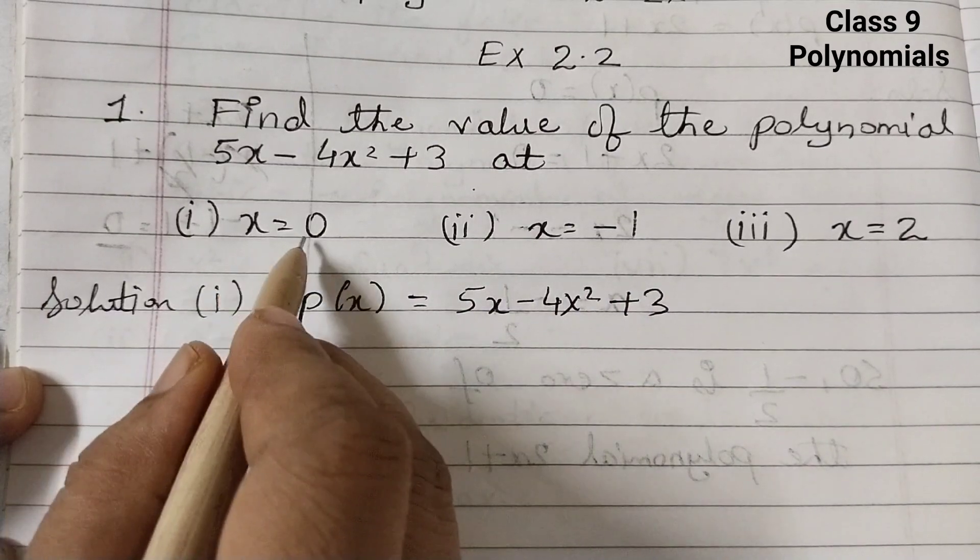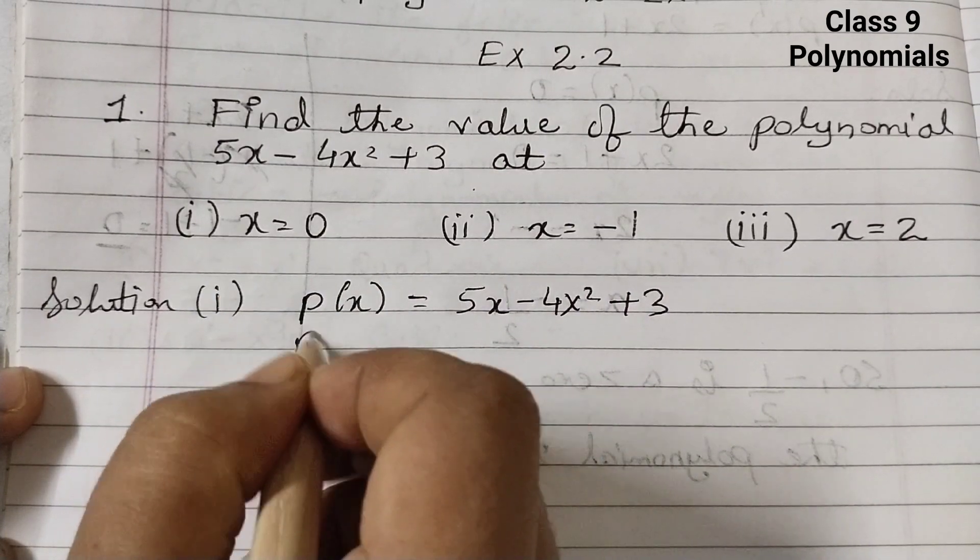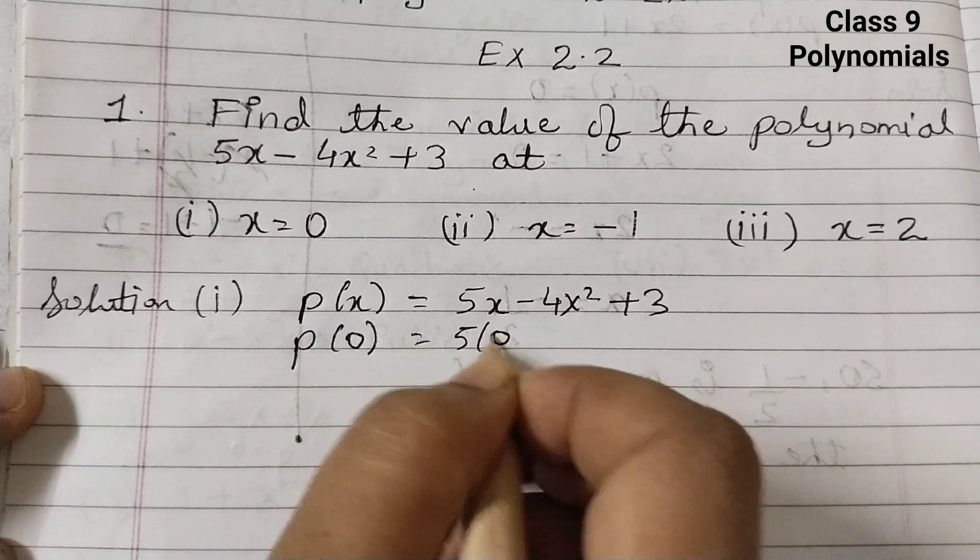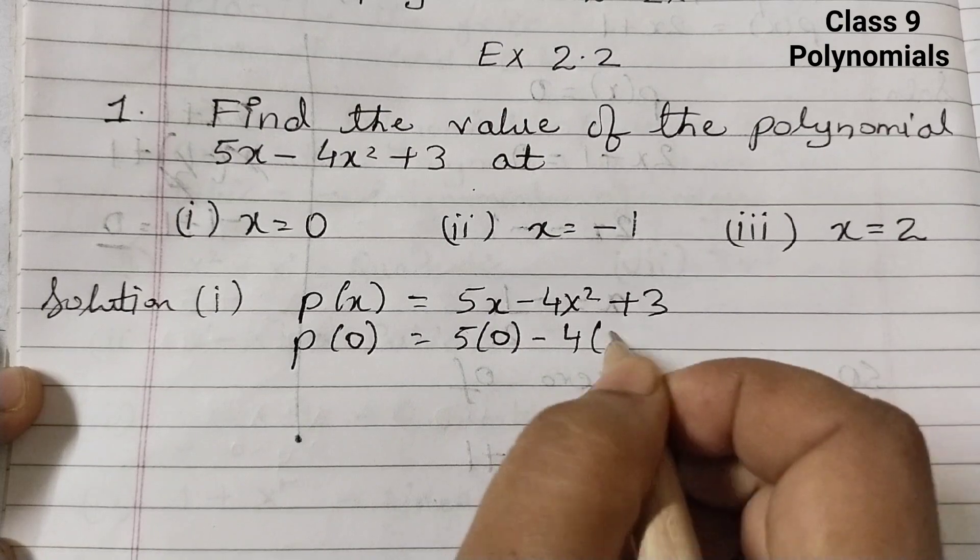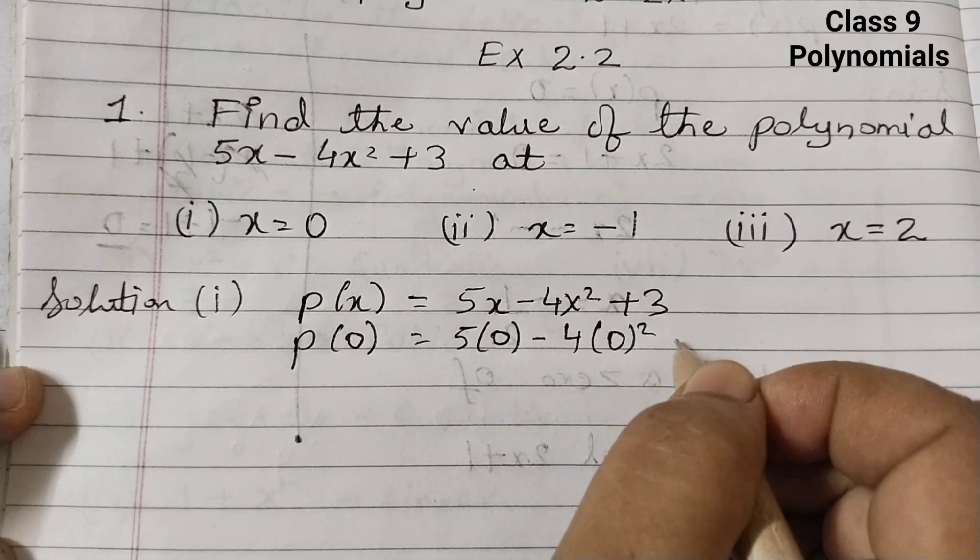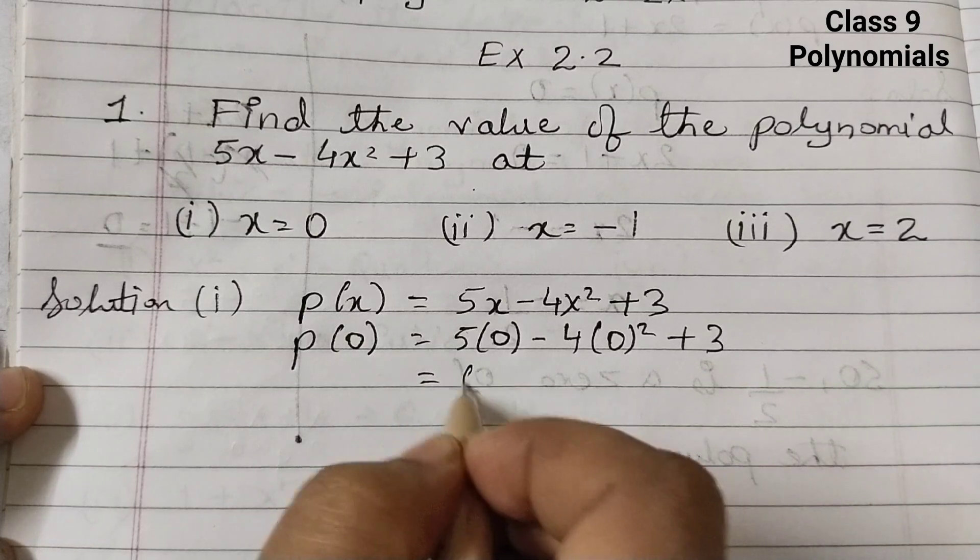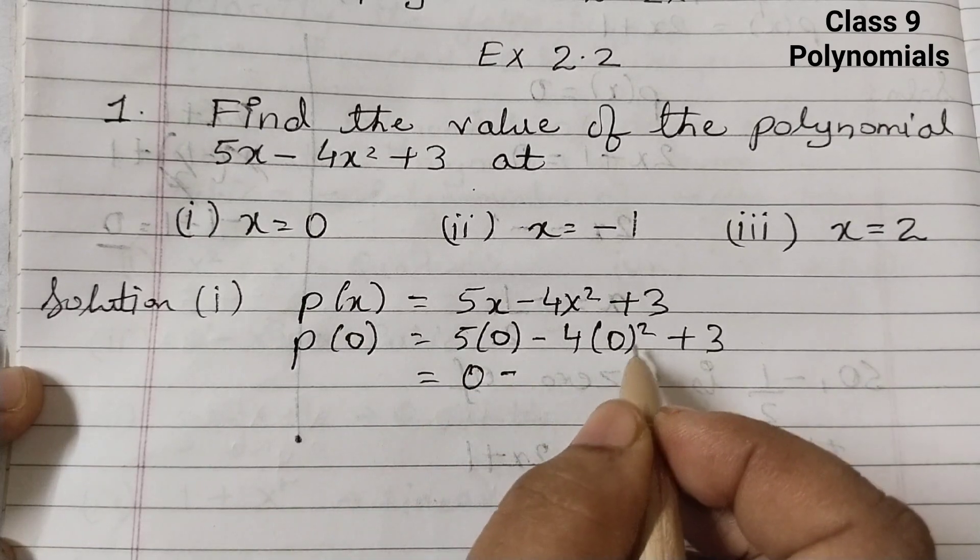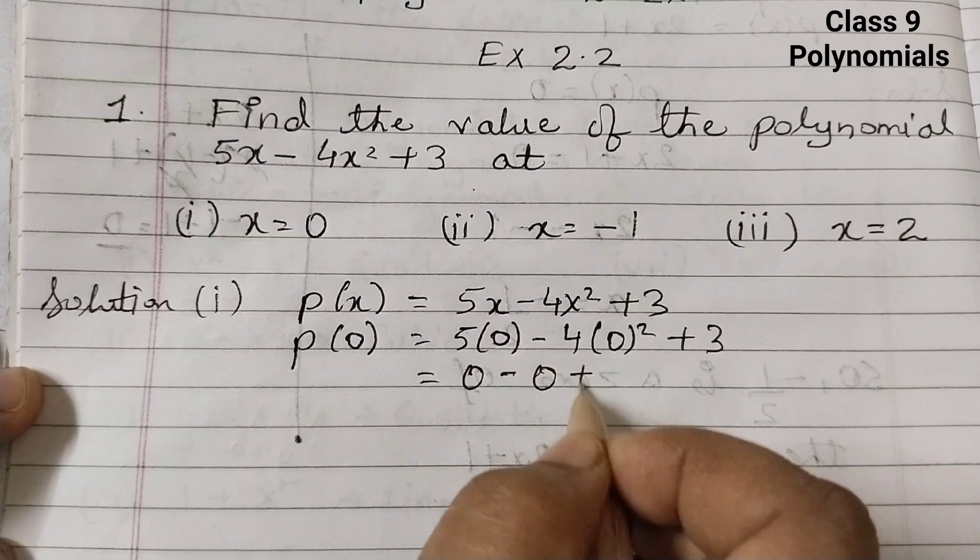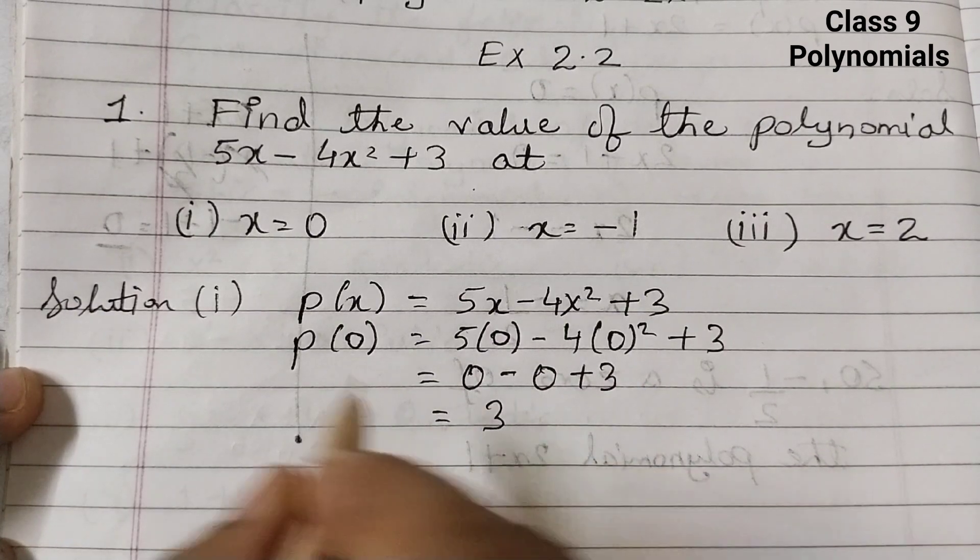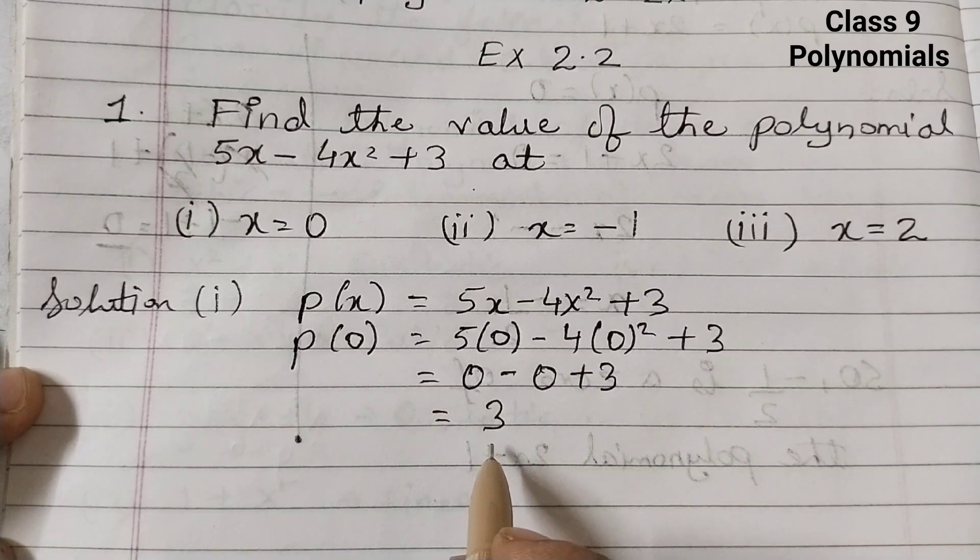Now we will find out x equals 0, so we will find p of 0. 5 into 0 minus 4 times 0 squared plus 3. 5 into 0 is 0, minus 0 squared is 0 multiplied by 4 is 0, plus 3. So this equals to 3. So p of 0 is 3.